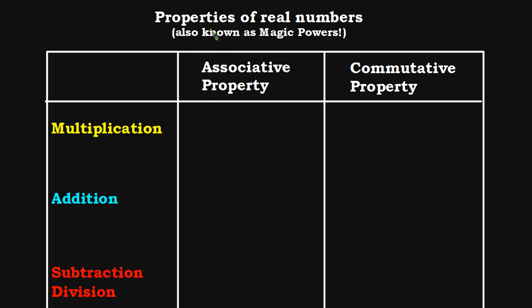Let's get right to this topic: properties of real numbers. I'm also going to refer to them in class as magic powers, because that's exactly what they are. If you understand these properties, you're going to have the magical ability to successfully get answers to algebra problems. We're going to use these throughout all the algebra in this class, so it's important to know them.